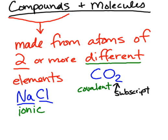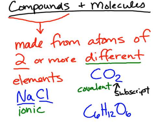Another example of a compound is glucose, C₆H₁₂O₆ — the sugar that plants produce during photosynthesis. This is a compound by definition because it contains three different elements: six carbon atoms, twelve hydrogen atoms, and six oxygen atoms. It is a collection of atoms made from more than one type of element.